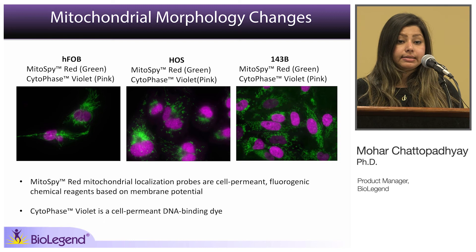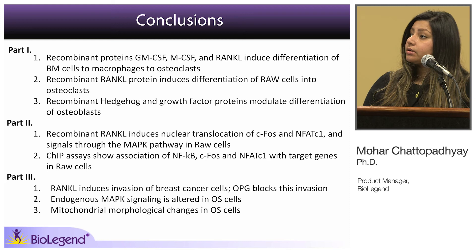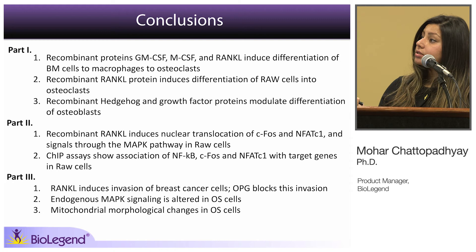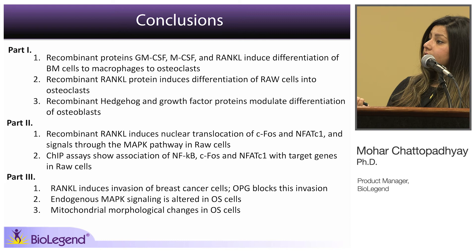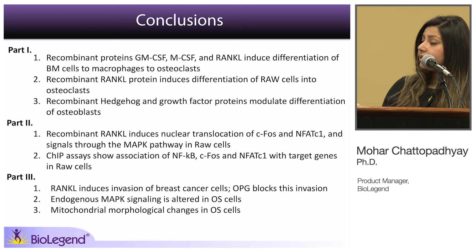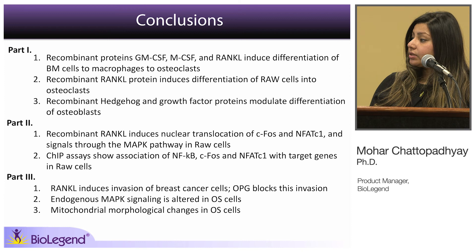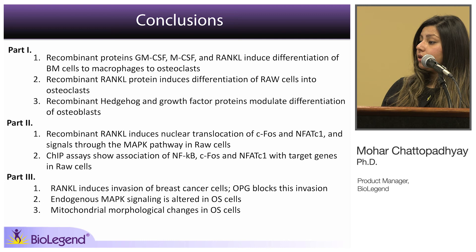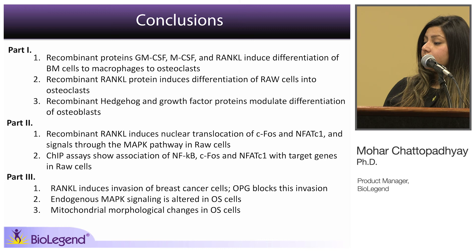In conclusion: Part one showed that recombinant proteins GM-CSF, M-CSF, and RANKL can induce differentiation of bone marrow cells to macrophages to osteoclasts, and that RANKL alone can differentiate RAW cells into osteoclasts; recombinant hedgehog growth factors and receptor proteins can modulate osteoblast differentiation. Part two showed RANKL induces nuclear translocation of c-FOS and NFATC1 via the MAP kinase pathway in RAW cells, and ChIP assays confirmed association of NF-κB, c-FOS, and NFATC1 with target genes. Part three showed recombinant RANKL induces breast cancer cell invasion and OPG blocks it, endogenous MAP kinase signaling was characterized in osteosarcoma cells, and mitochondrial morphological changes were documented in osteosarcoma cells.